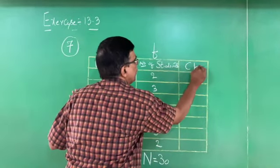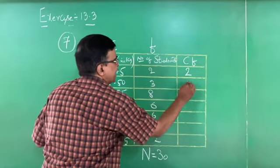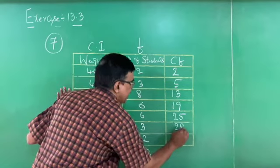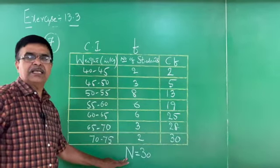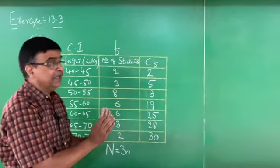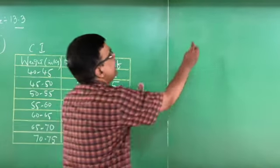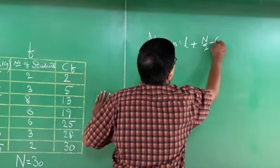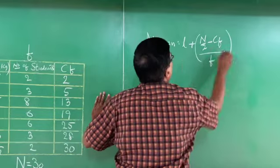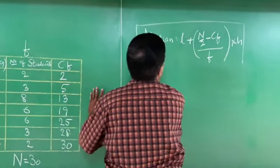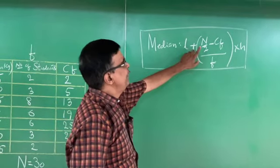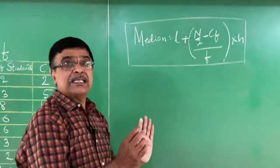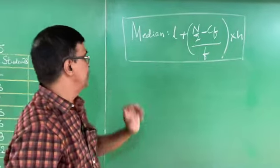Adding cumulative frequencies: 2, 2+3=5, 5+8=13, 13+6=19, 19+6=25, 25+3=28, 28+2=30. N = 30 and the last CF is also 30. For this grouped data, the formula is Median = L + [(N/2 − CF) / F] × H.